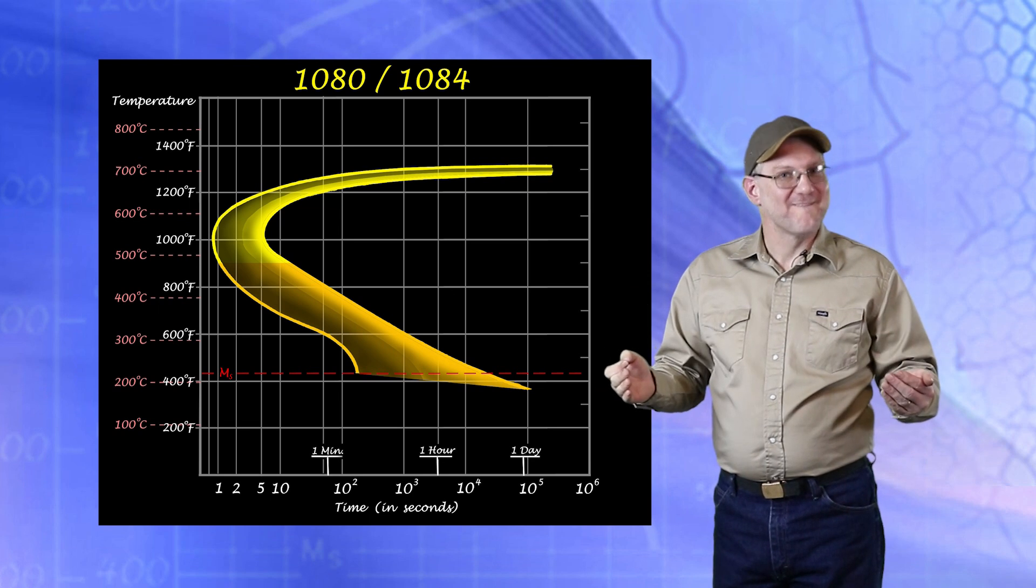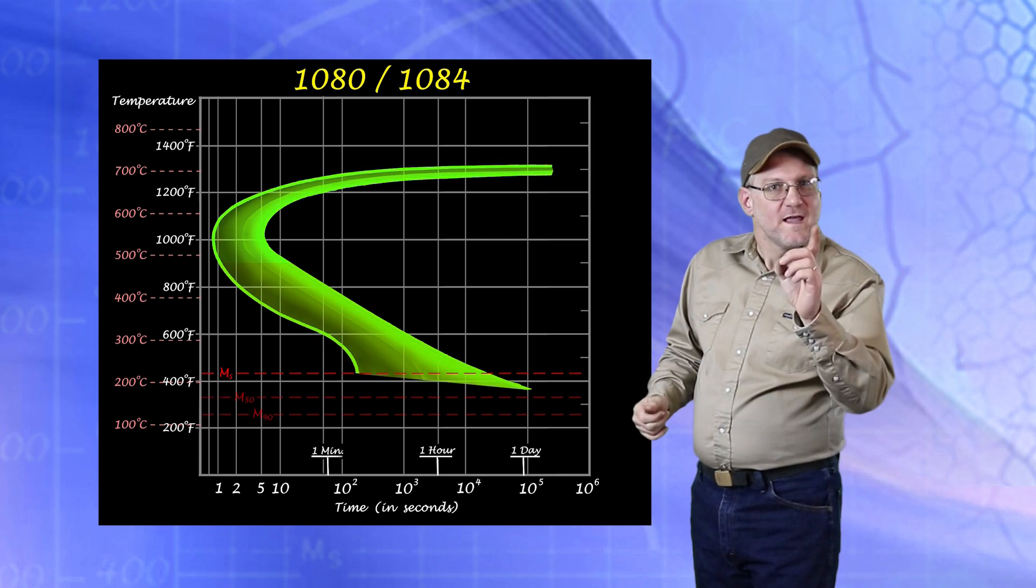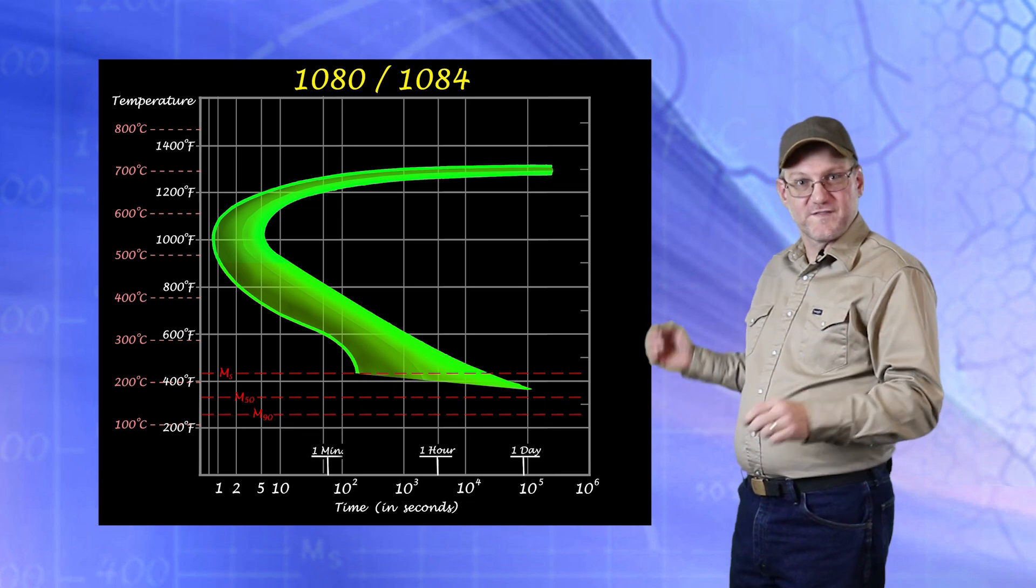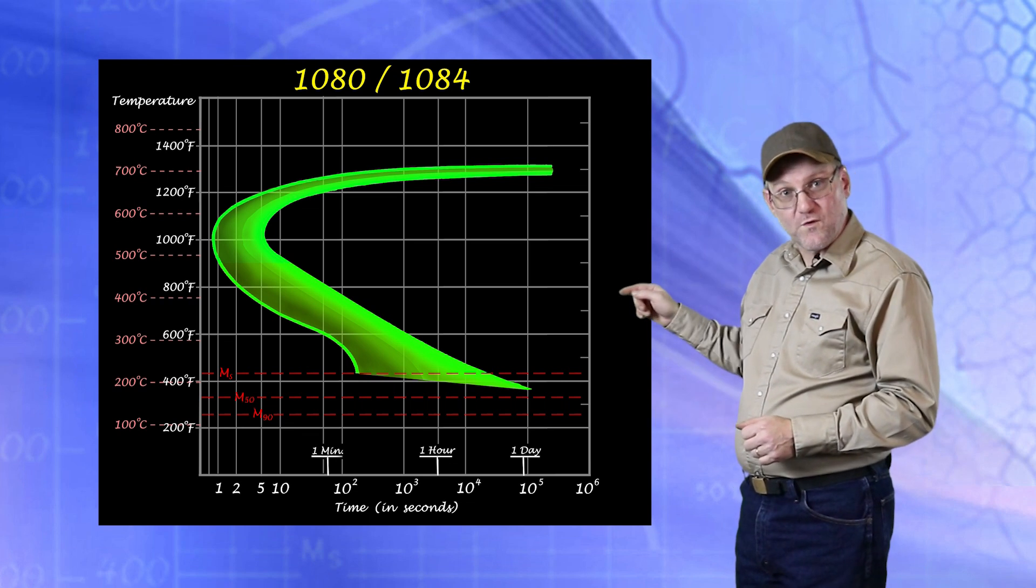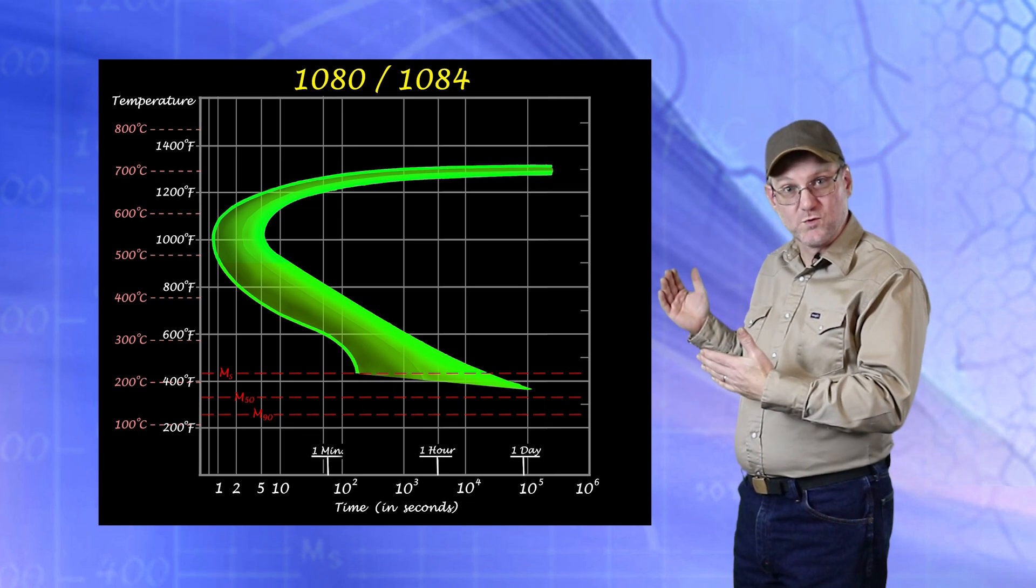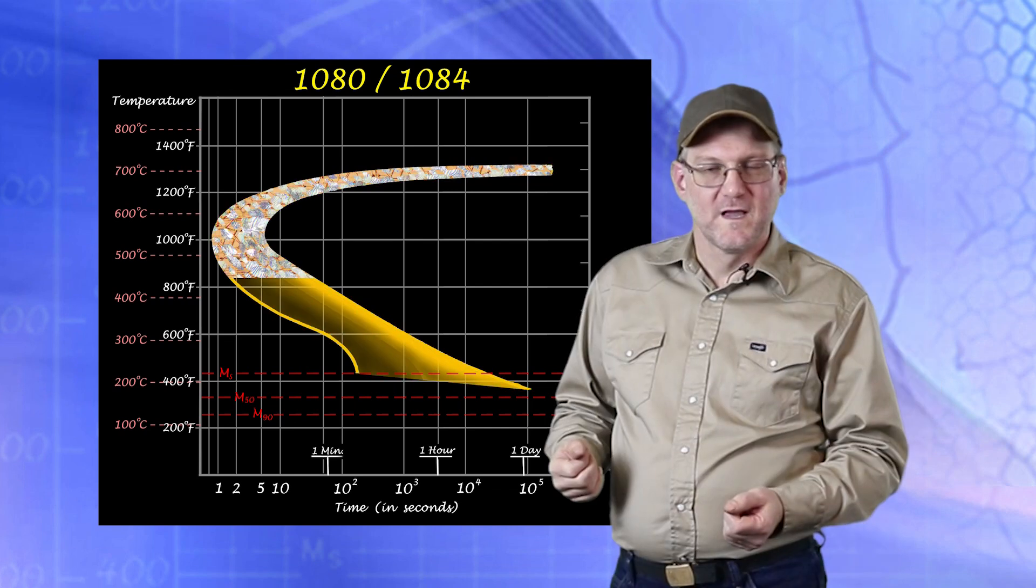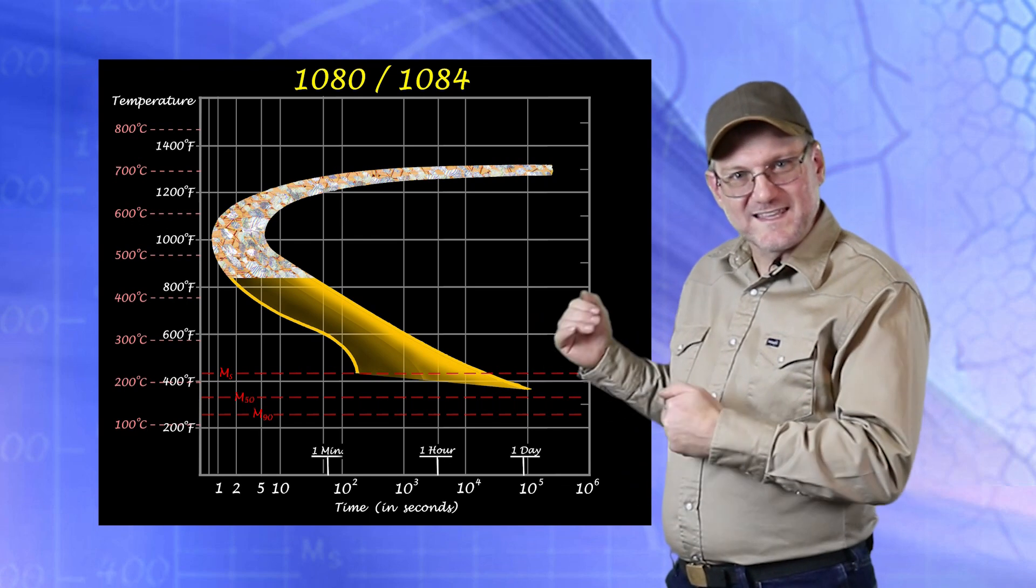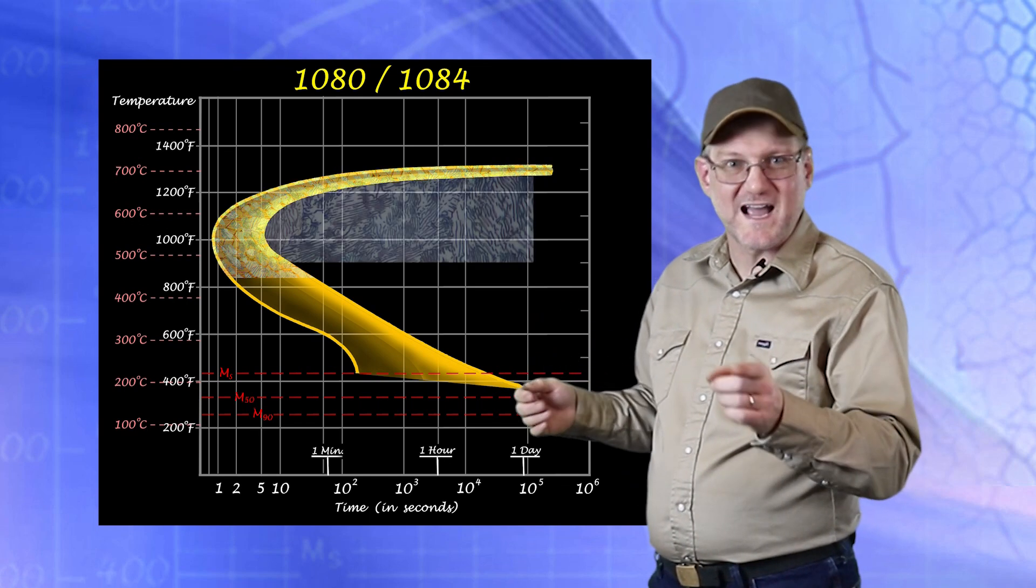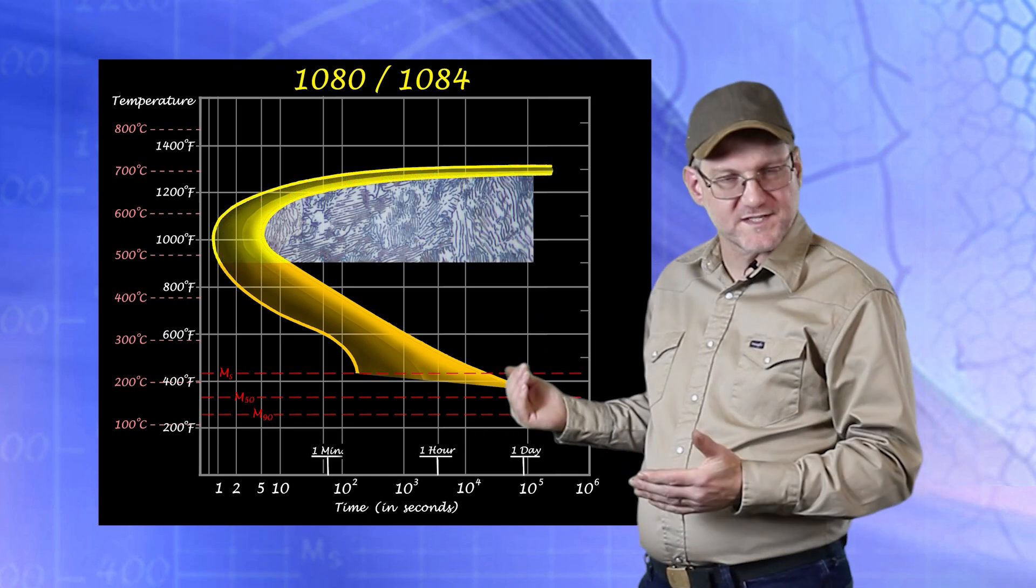The next part of the diagram is a curve that shows the other phases that will form from the austenite as it cools when given time for diffusion. At first there will be a mixture of austenite and these new phases, but with enough time they will entirely replace the austenite.